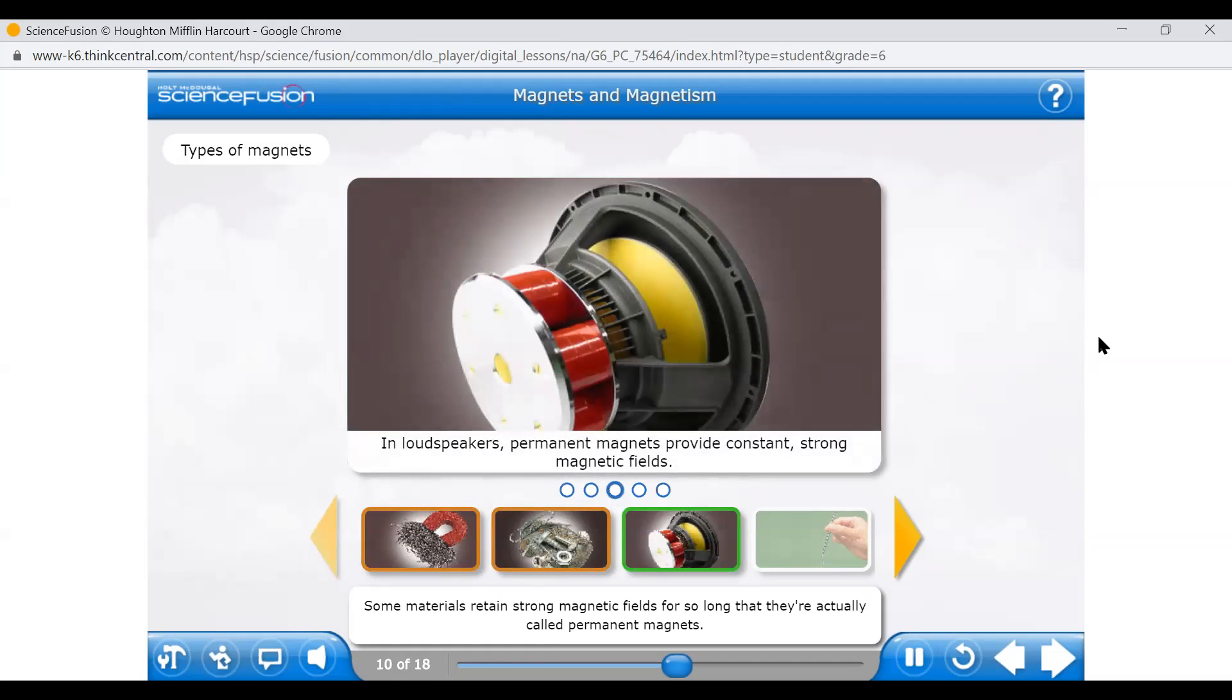Some materials retain strong magnetic fields for so long that they're actually called permanent magnets. Permanent magnets are harder to make than ferromagnets, but they keep their magnetic properties longer. The permanent magnets shown here are wrapped in red insulating tape. They're made of alnico, an alloy of aluminum, nickel, cobalt, and iron.